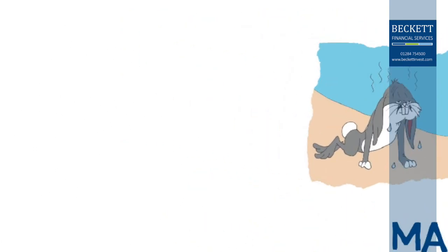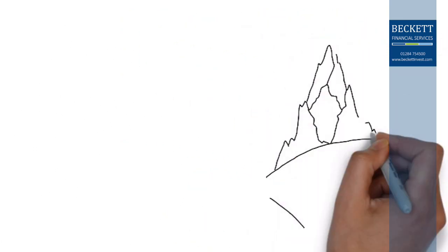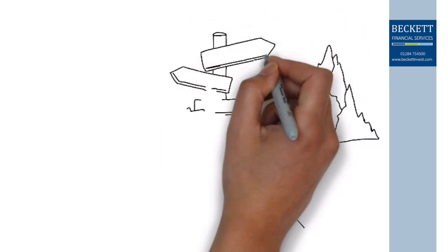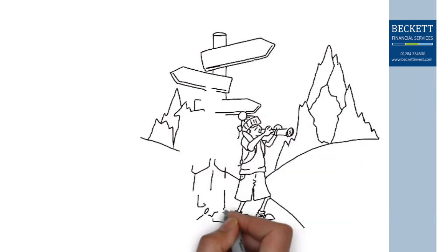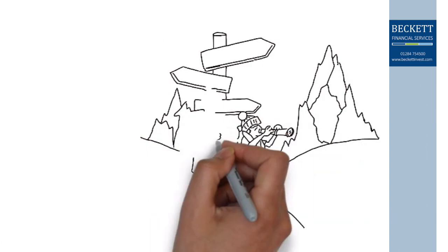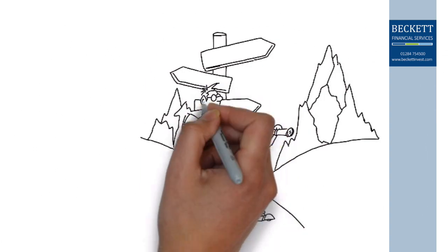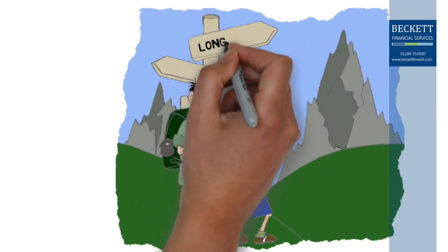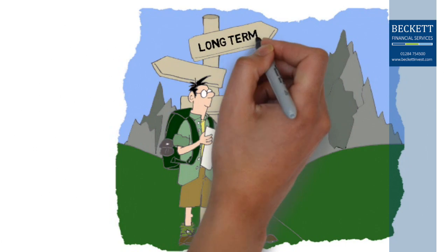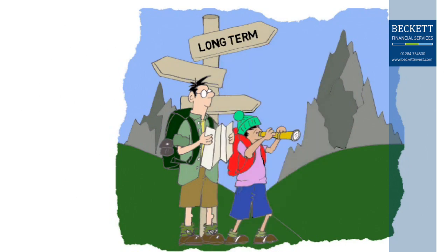The general trend in stock markets over time is for steady increases, but the trajectory is rarely smooth. The COVID-19 sell-off was an example of a dramatic market downturn in which eight years of gains on the FTSE 100 were wiped out in a matter of days. But this is not the first time that markets have experienced turbulence.